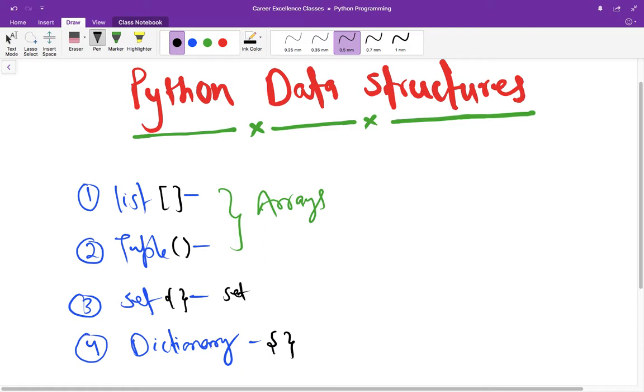So list and tuple, these both are ordered datasets and they also have indexing, like we studied in strings. We will cover these things in detail in coming lectures, but as of now you should understand that these data structures are ordered and provide indexing and work like arrays.